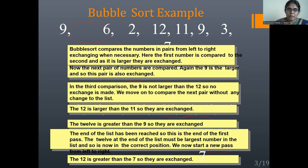Bubble Sort compares numbers in a pass from left to right. Whenever a swap is required, the exchange process takes place. The first number is compared with the second one.